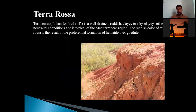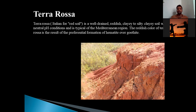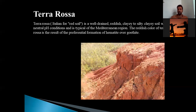The third example is Terra Rosa. Terra Rosa is derived from the Italian term for red soil. It is a well-known, well-drained reddish clay to silty clay soil with neutral pH, typical of the Mediterranean region. The reddish color of Terra Rosa is the result of the superficial formation of hematite over goethite — both are ores of iron — and because hematite is more prominent over goethite, the reddish color develops. Terra Rosa is also a known example of residual sedimentary deposit.